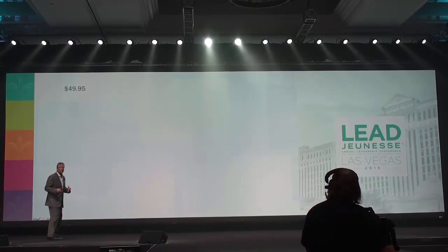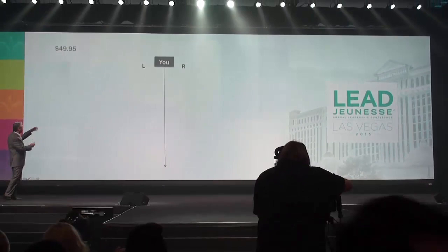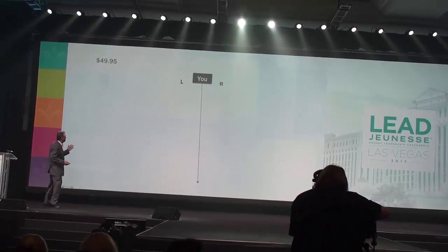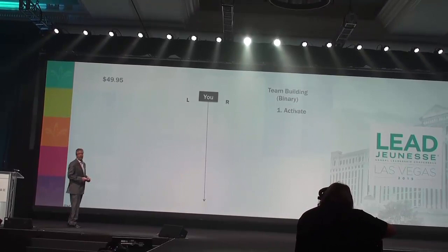And there are several different ways to make money in our plan. When you spend your $49.95 here in the United States, they give you a position in the computer. And what I'm going to do is just graphically represent here on the screen the computer program. So you get a position in the computer, and the first thing you're going to want to do is activate in our plan.